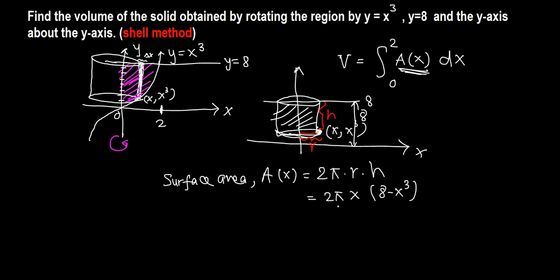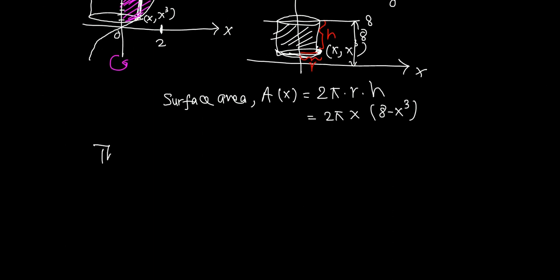Now we have the surface area, all we have to do is plug this into the volume formula. The volume of the solid of revolution is the integral from 0 to 2 of 2 pi x times (8 minus x cubed) dx. We can pull 2 pi outside.